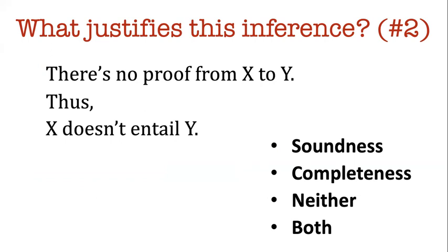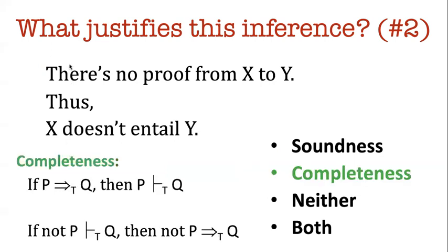Okay, the answer here is completeness. But you have to be careful because this might look like the antecedent of soundness, but it's not. Completeness says if p entails q, then there's a formal proof of p to q. But remember the contrapositive of this.